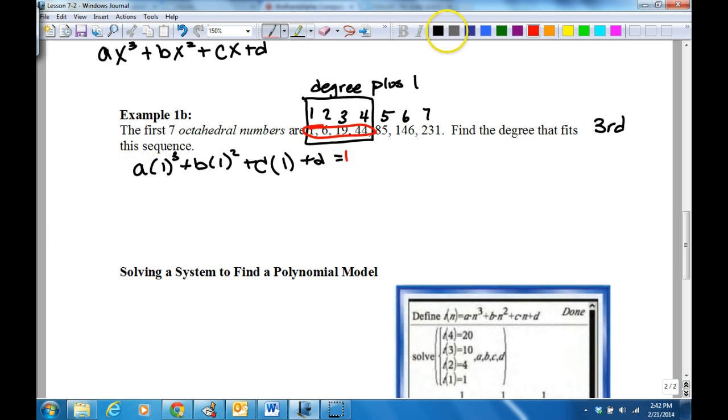Now I'm going to take the very first one, the number one, and put it into my generic form. And that's what I got. I'm going to do the same thing with the number two now: a times two to the third plus b times two squared plus c times two plus d equals six.